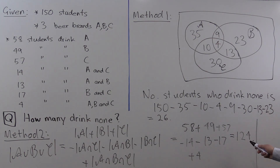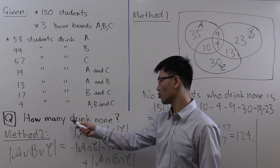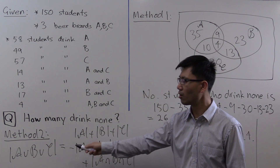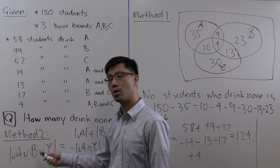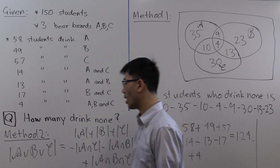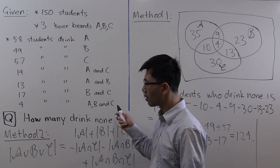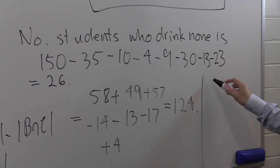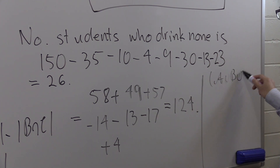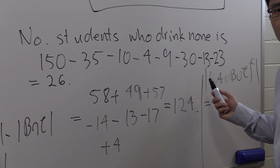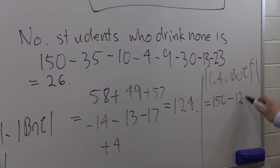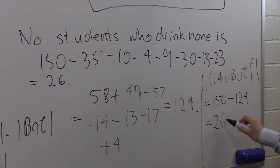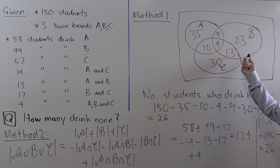To finish the question, we need the number of students who drink none of these brands, which corresponds to the complement of A union B union C. There are 150 students total, so we take 150 minus 124, and the remainder is 26 — the same answer we got using the Venn diagram method.